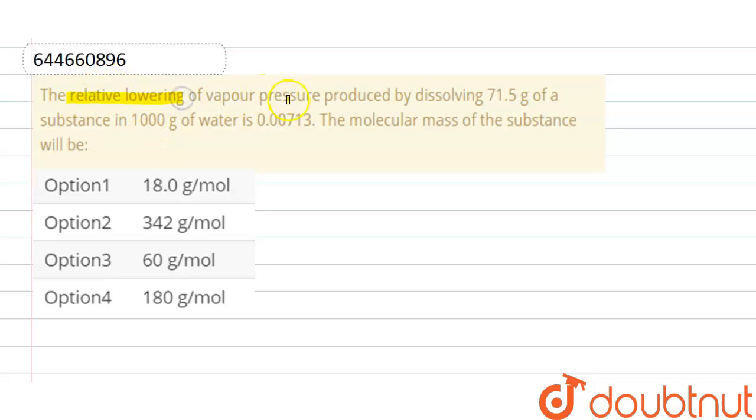The relative lowering of vapor pressure produced by dissolving 71.5 gram of a substance in 1000 gram of water is 0.00713. The molecular mass of the substance will be? Okay, so here as we know, according to Raoult's law, relative lowering in vapor pressure